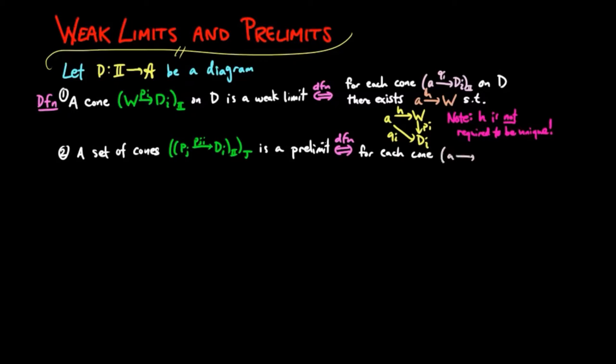for each cone QI on D, there is an index J and a morphism H from A to P_J such that P_J,I H is equal to QI for each I.